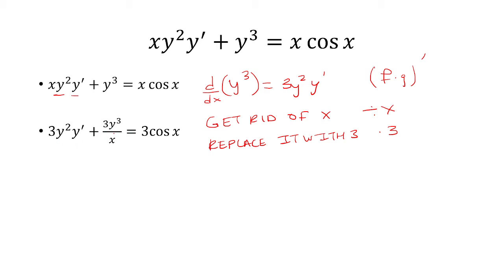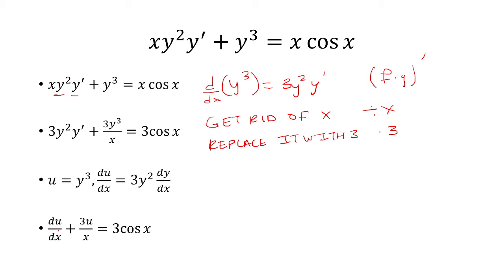When I do that, there's one issue though — I have an x in the denominator, and I don't like that. So I'm going to make a substitution and let u equal y cubed, so du over dx will be 3y squared dy over dx. Now we have du over dx plus 3u over x equals 3 cosine x, and this is something I know how to integrate.